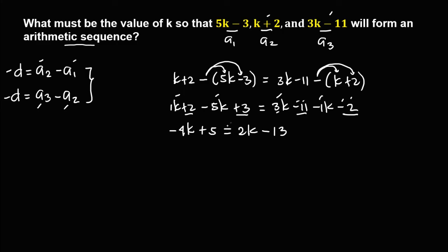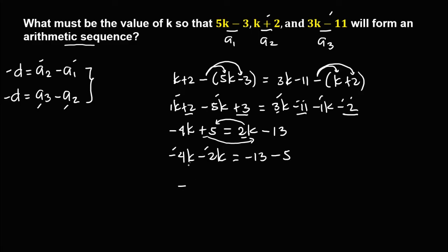To solve for k, we need to transpose this positive 2k to the left side, so this becomes negative 2k. Then transpose this positive 5 to the right, so positive 5 becomes negative 5. Simplify: negative 4k and negative 2k — same sign, just copy and add: 4 plus 2 is 6k.